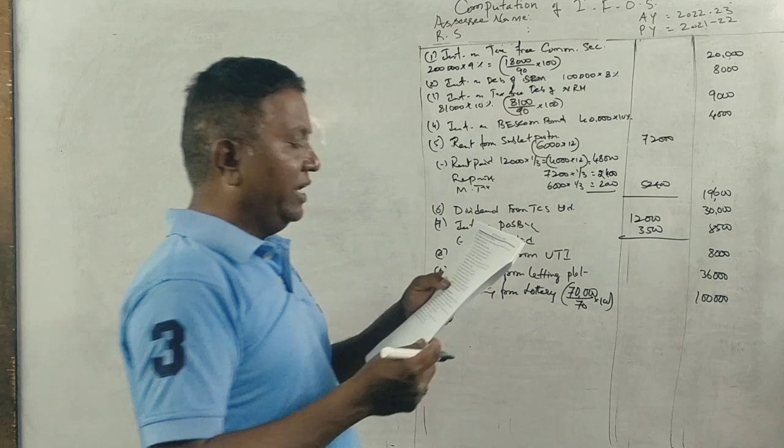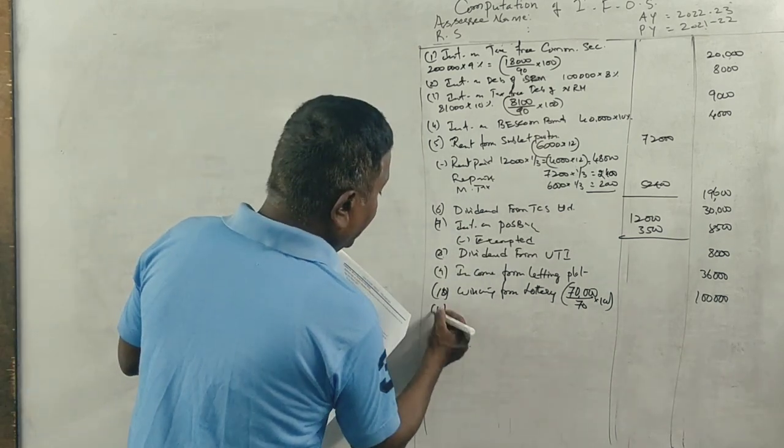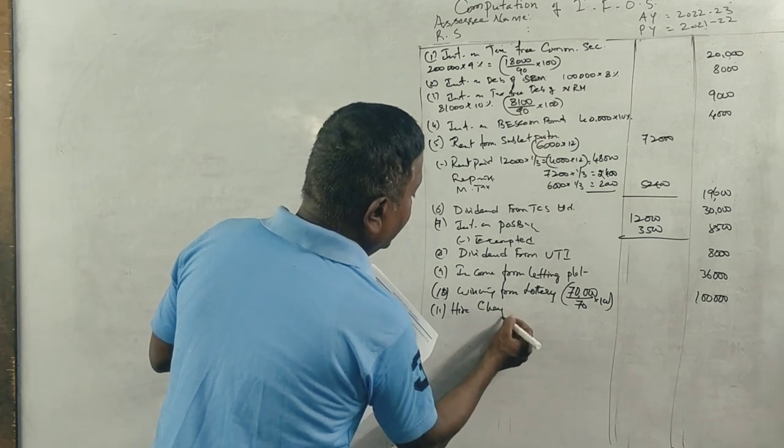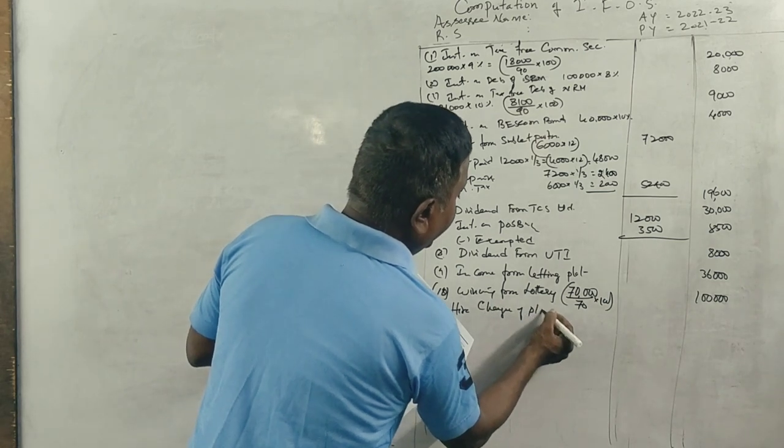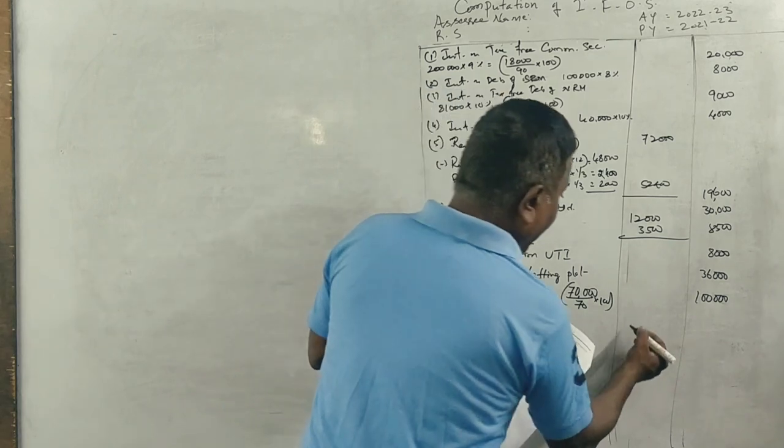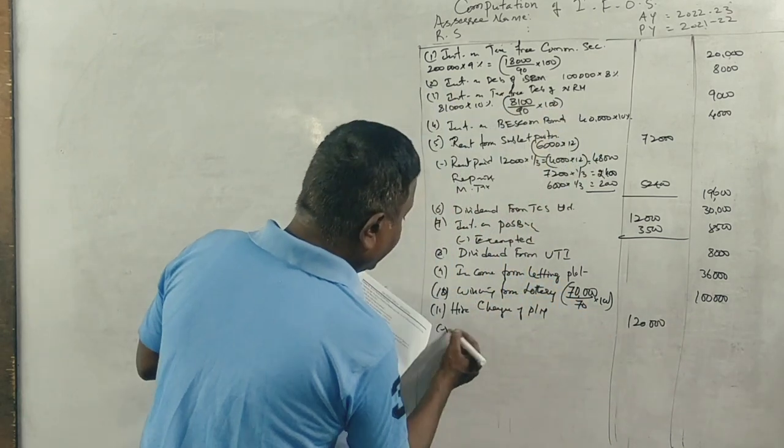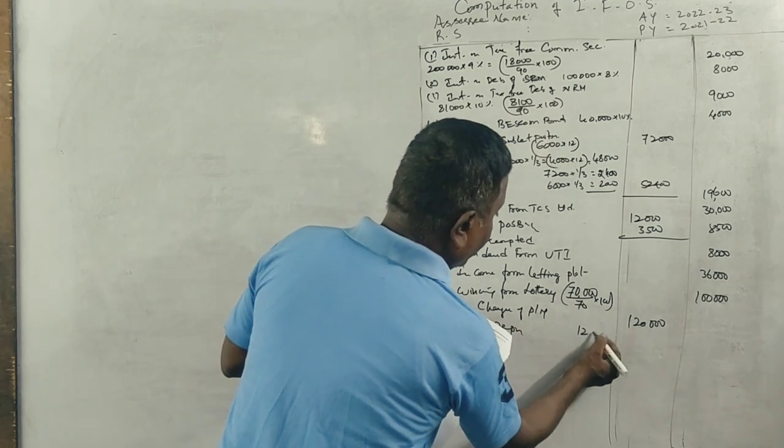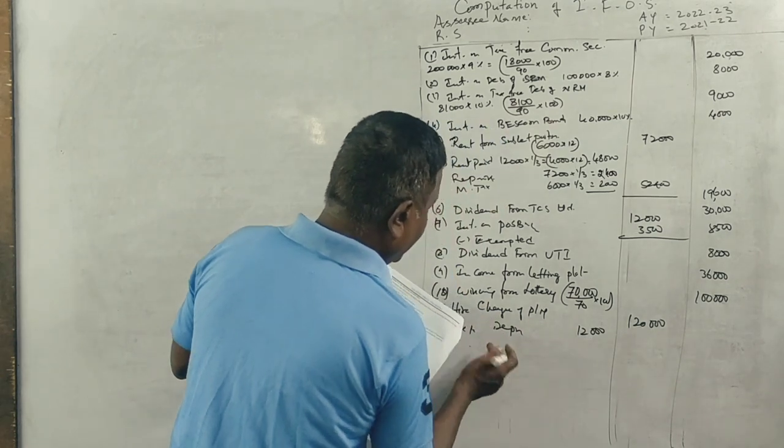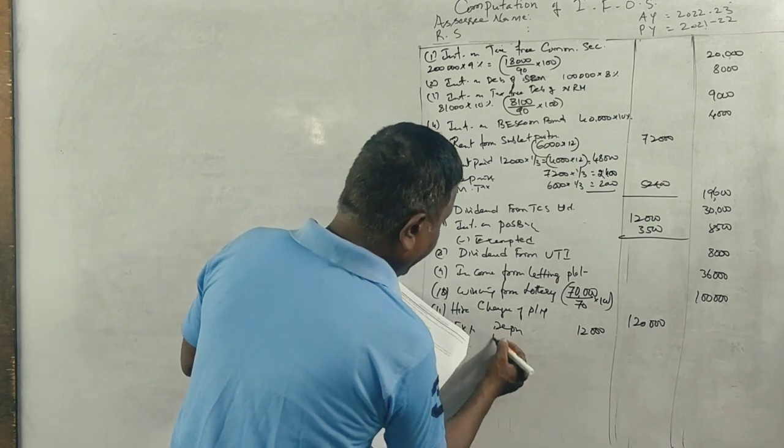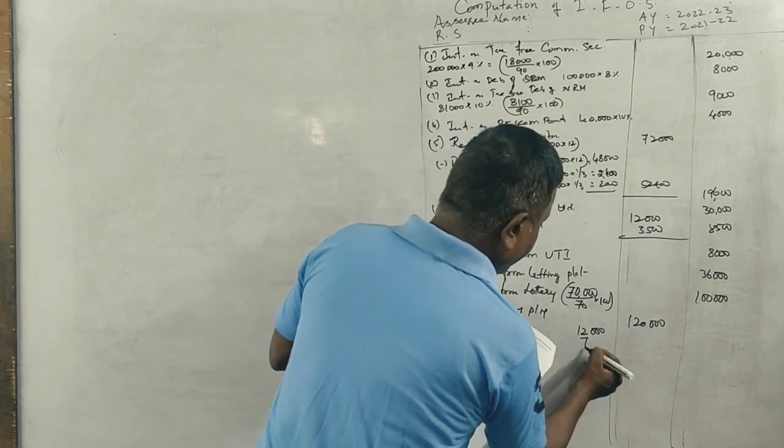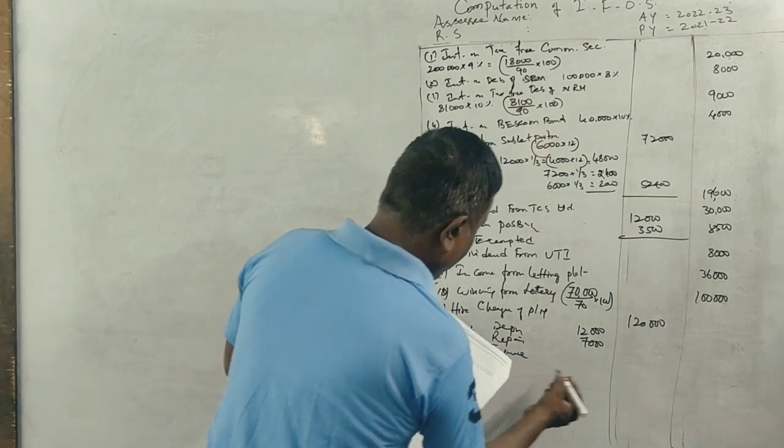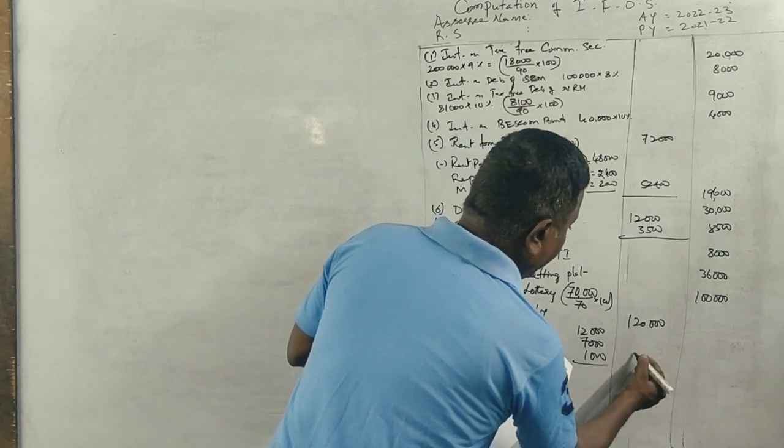Income from letting out plant and machinery. Hire charges of plant machinery is 1,20,000. Expenses incurred: depreciation 12,000, repairs 7,000, insurance 1,000, total 20,000. Net income 1,00,000.